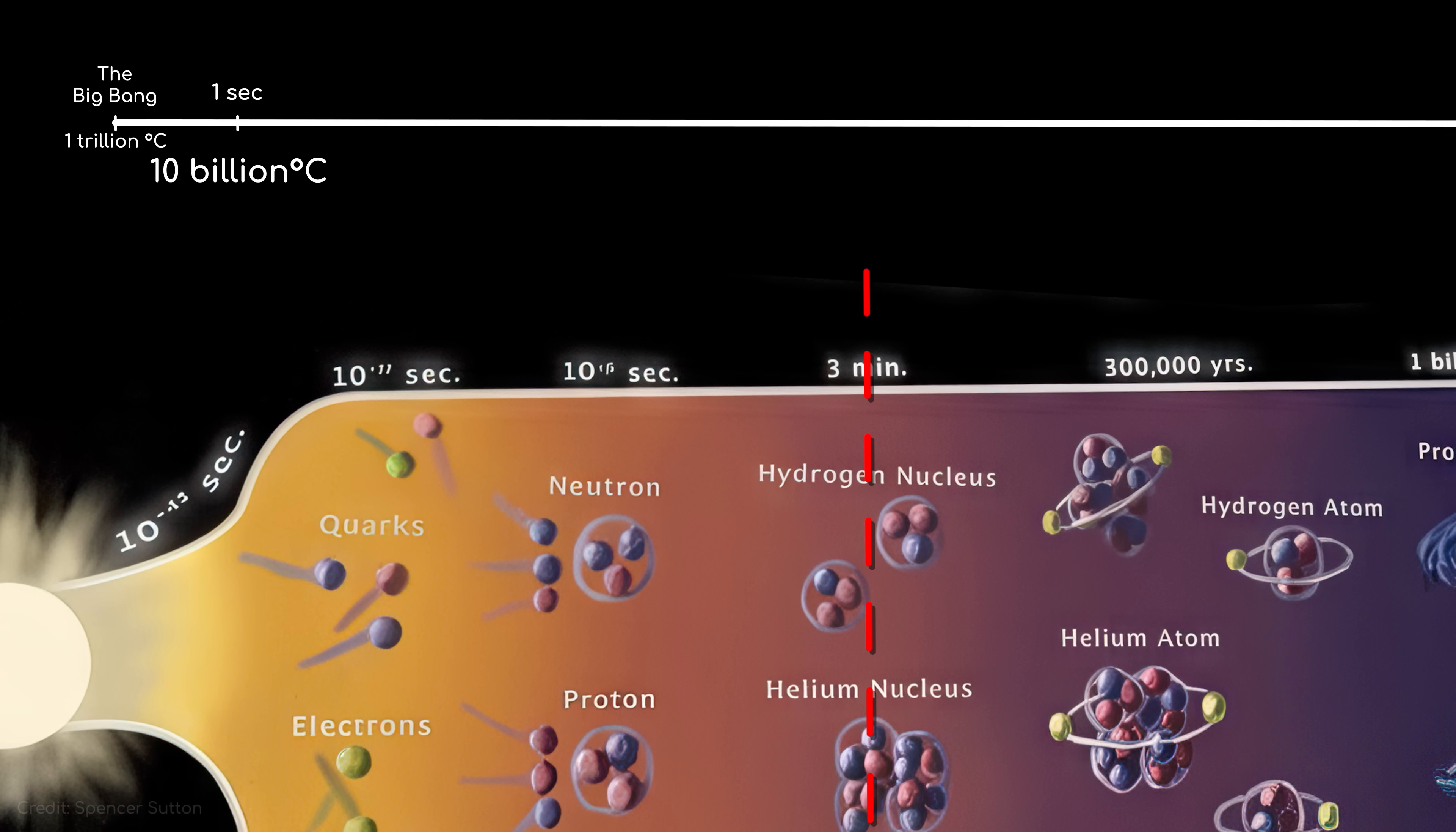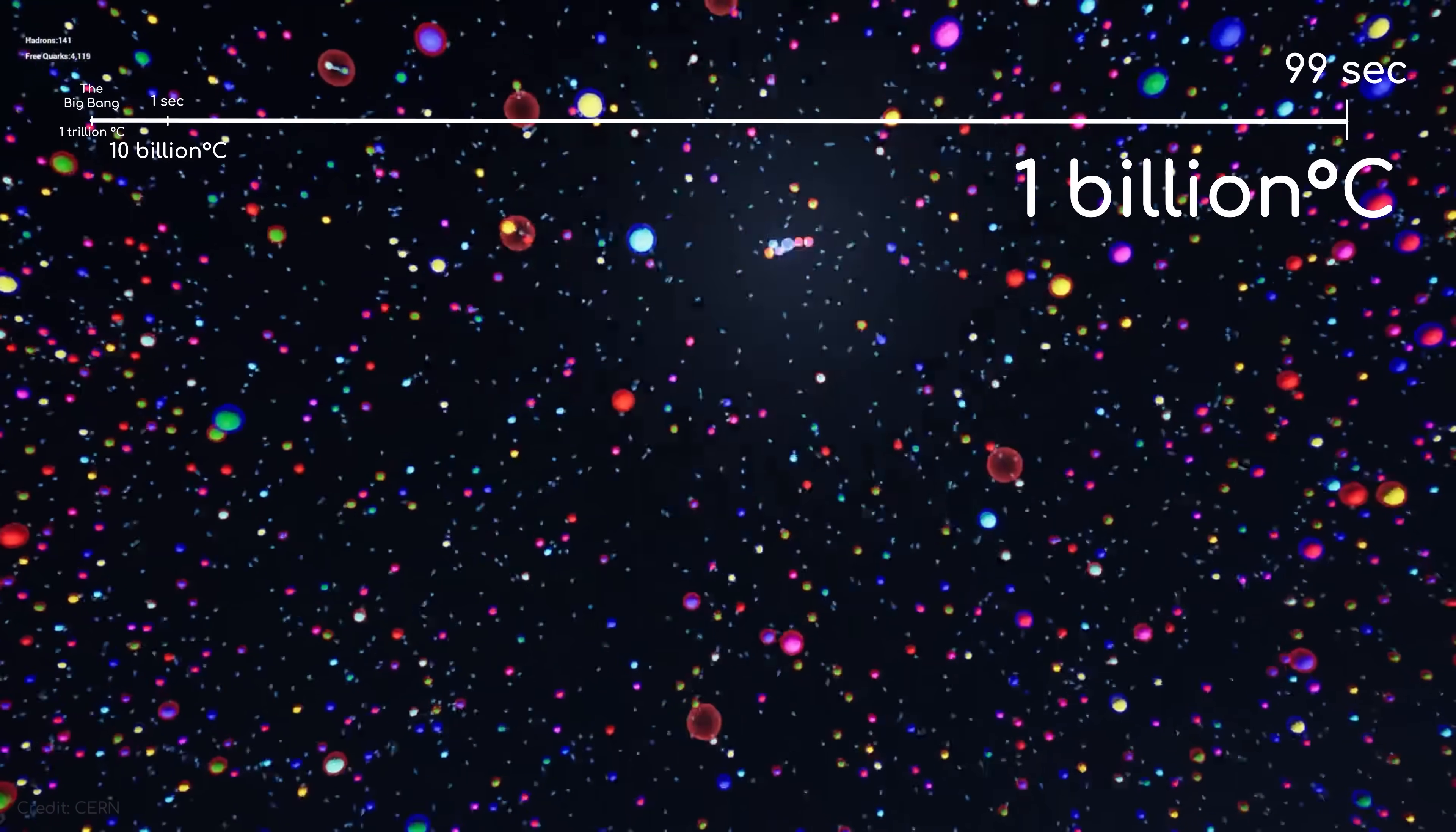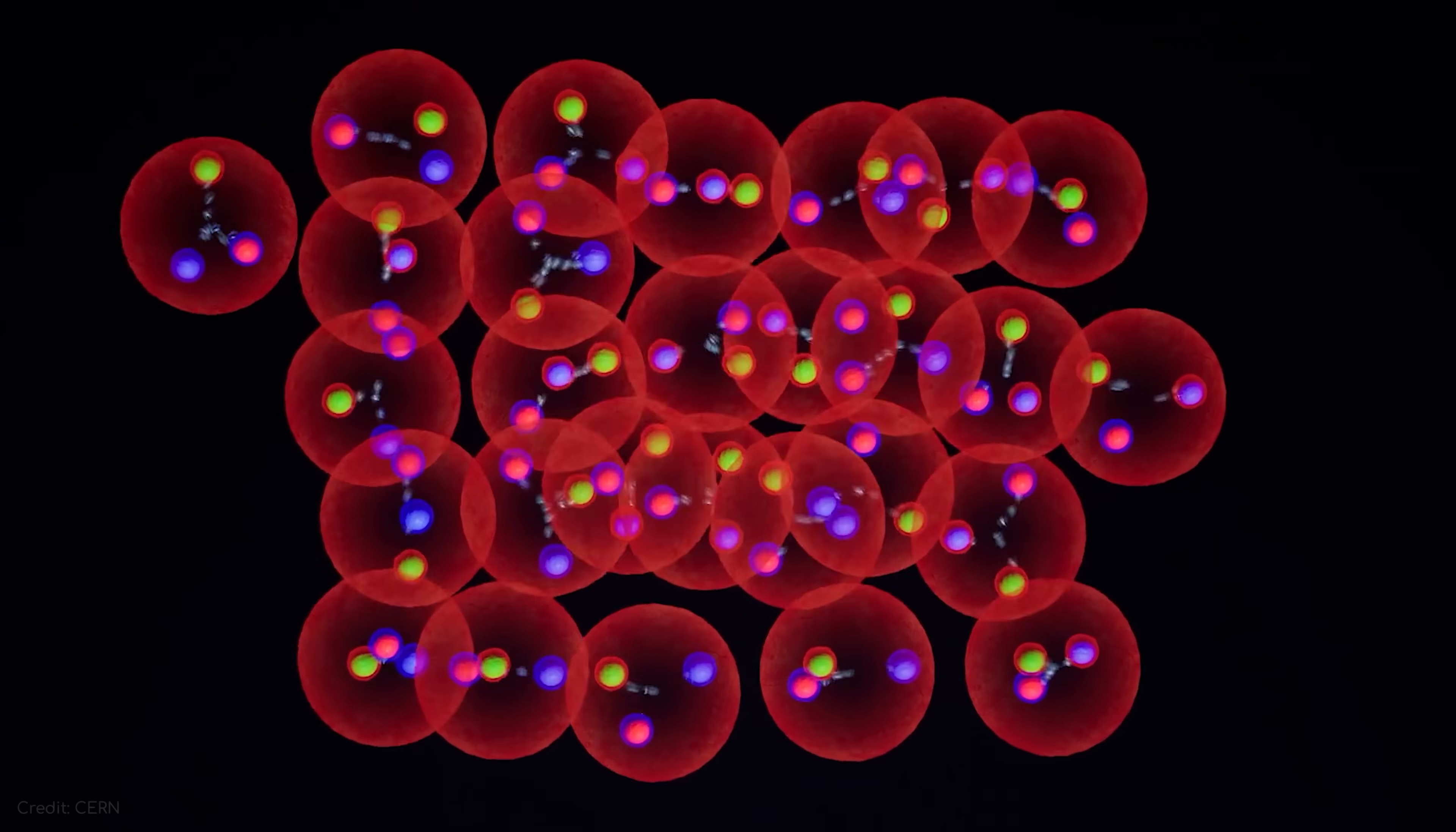The universe didn't remain as just radiation for long. Just 99 seconds later, it would have cooled to 1 billion degrees Celsius. And the strong force would have kicked in. The universe's first protons by then had started forming, and began binding with neutrons, creating hydrogen, and the one proton, one neutron isotope of hydrogen known as deuterium.